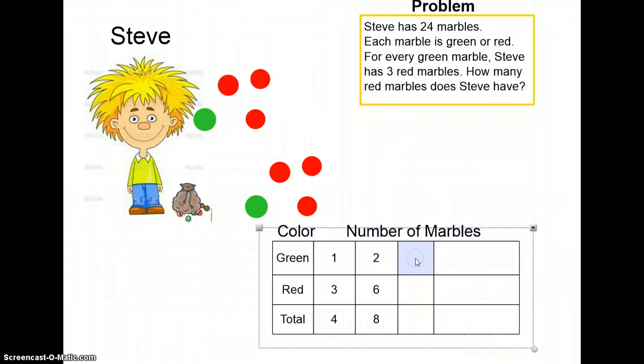Let's look and see what happens if we have three green marbles. If there are three green marbles, there will be nine red marbles. That creates a total of 12 marbles. Do you see a pattern?